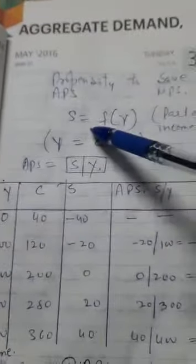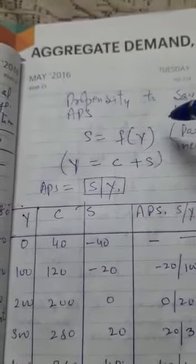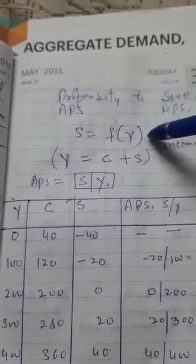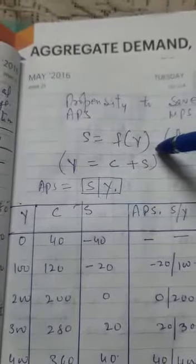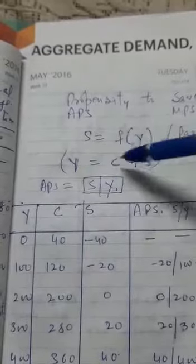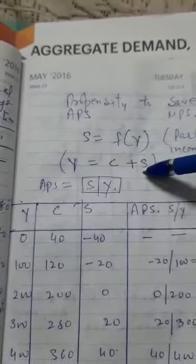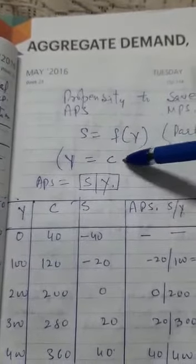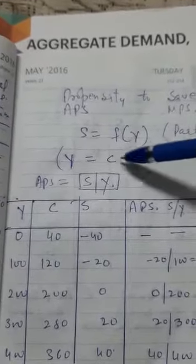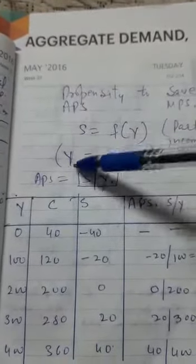Well, all of you know that similarly saving is also the function of income. That means this is the part of the income which is saved. As you all know that income is equal to C plus S. That means income is either consumed or saved. So, the total of these two is your income only. Income is C plus S.